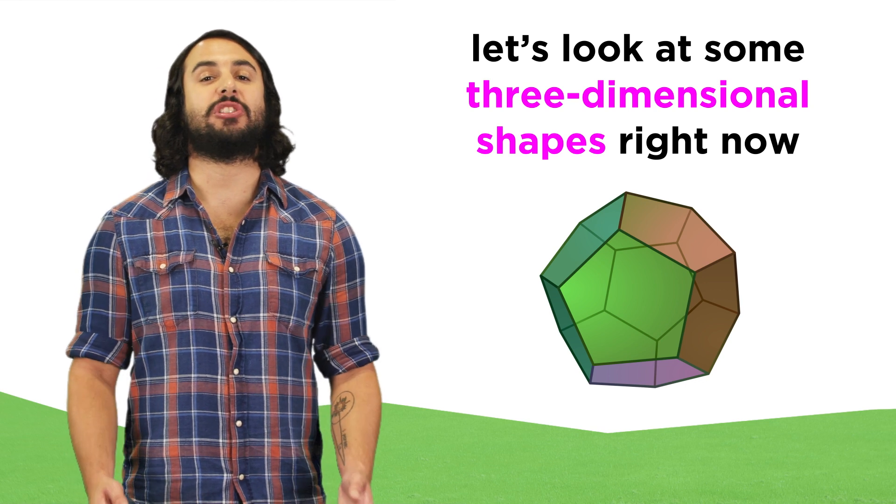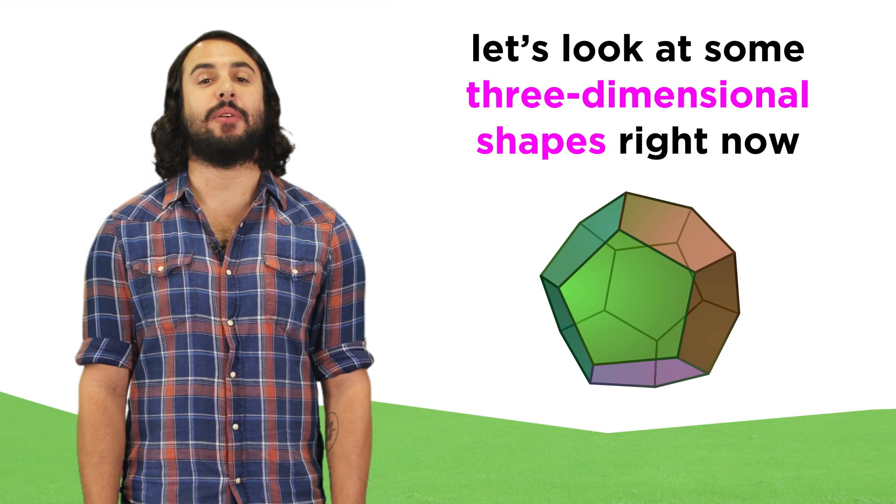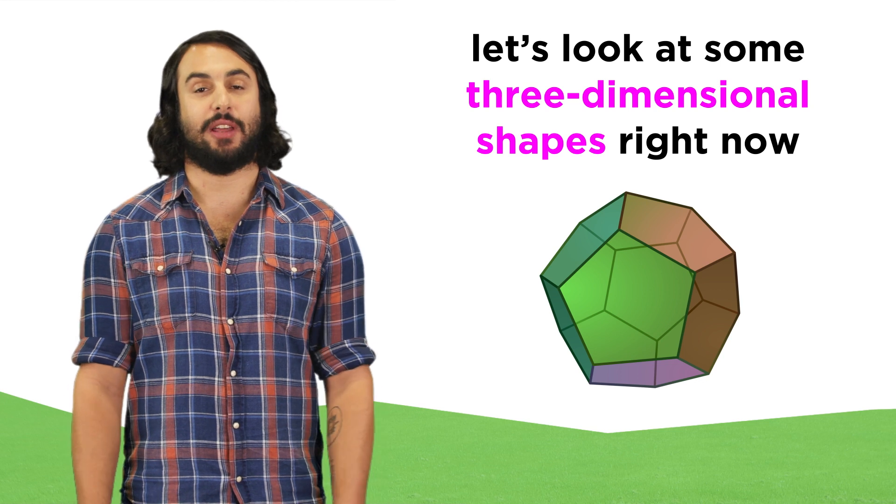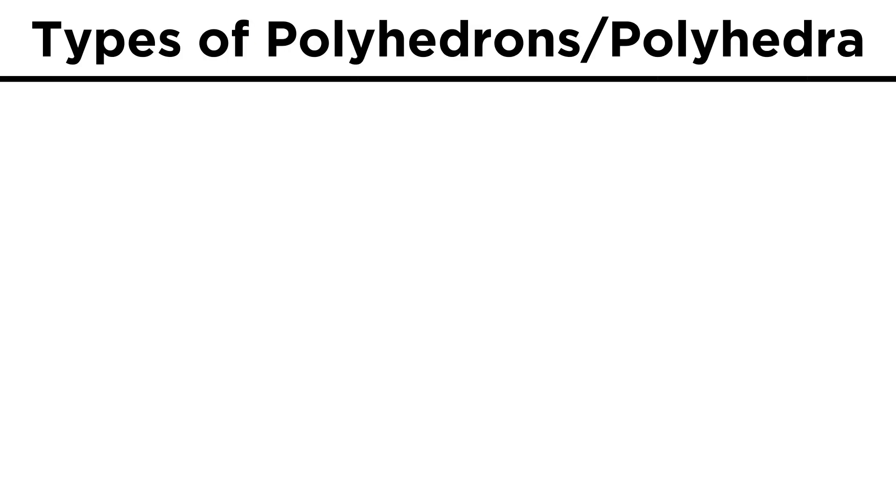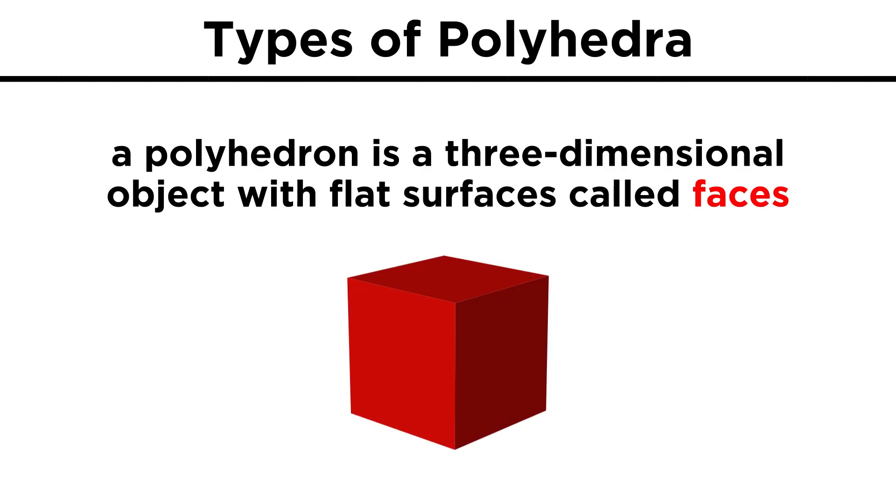Let's go through some of these shapes now, and talk about some of their parameters that we can calculate. First of all, rather than calling these things shapes, let's refer to them by their proper name, polyhedrons. A polyhedron is a three-dimensional object with flat surfaces called faces, and each face of a polyhedron is a polygon.